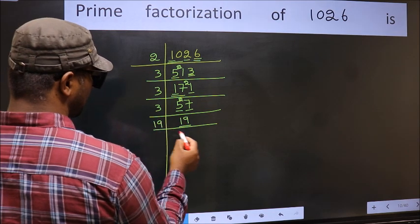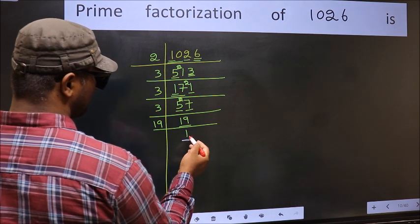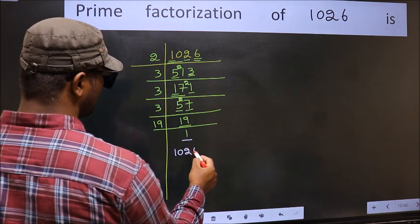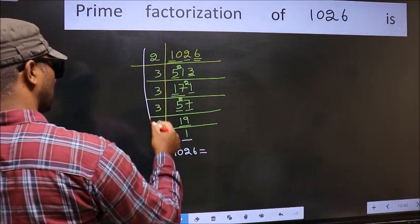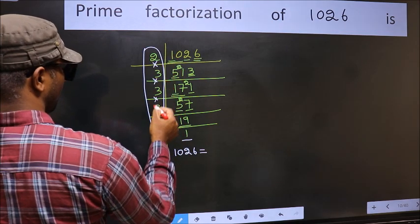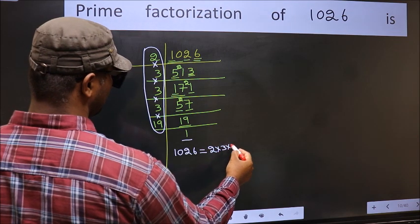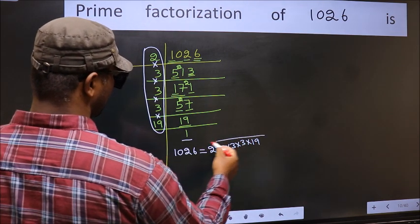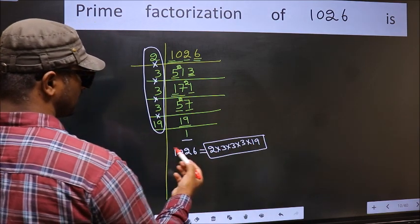19 is a prime number, so 19 once is 19. So we got 1 here. The prime factorization of 1026 is the product of these numbers: 2 into 3 into 3 into 3 into 19. This is the prime factorization of 1026. Thanks.